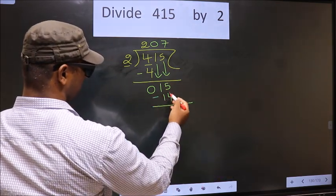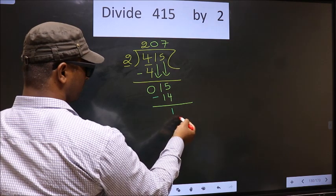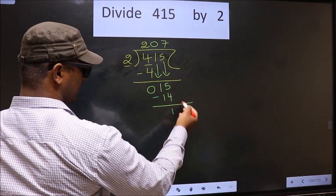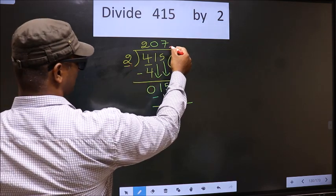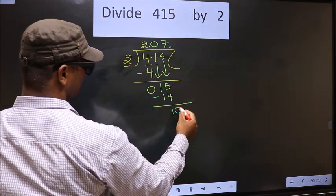Now you subtract: 15 minus 14, 1. We did not bring any number down, and 1 is smaller than 2. So you put a dot. Take 0 here.